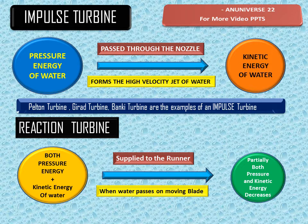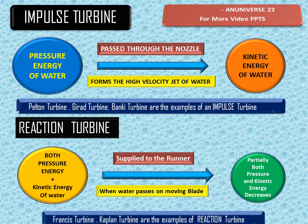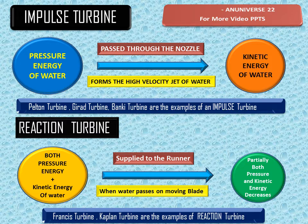In the case of an impulse turbine, the atmospheric pressure remains constant throughout the process. In a reaction turbine, the pressure is less than atmospheric pressure, which is why a draft tube is needed to increase the pressure. Examples of reaction turbines are the Francis turbine and Kaplan turbine.